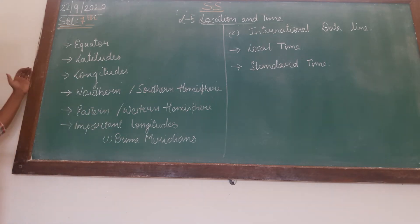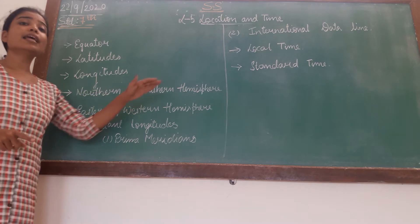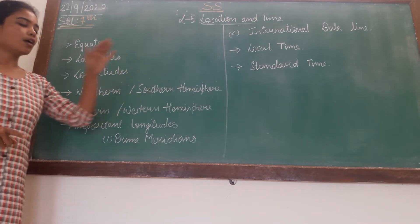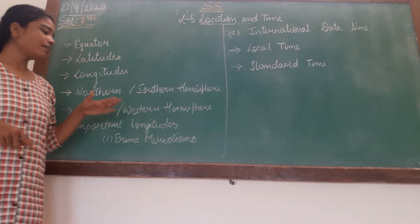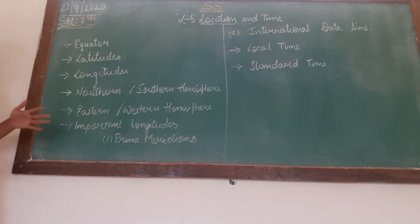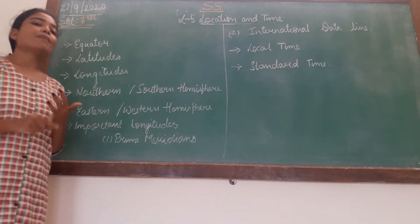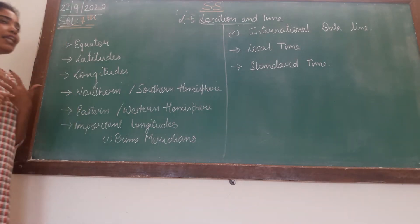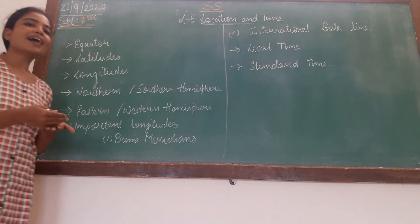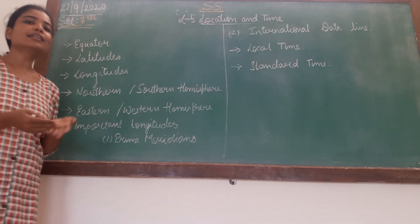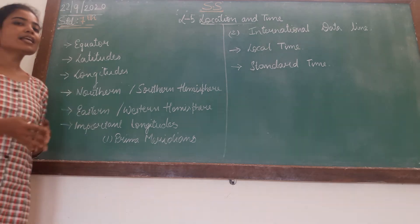We have also seen how 0 degree longitude divides the earth into eastern and western hemispheres. We were discussing about important longitudes and we discussed the prime meridian, that is 0 degree longitude, which passes through Greenwich and divides the globe into two parts — the eastern and western hemispheres.